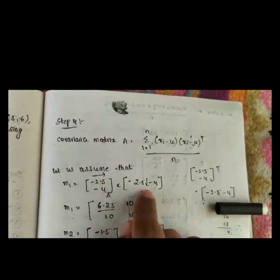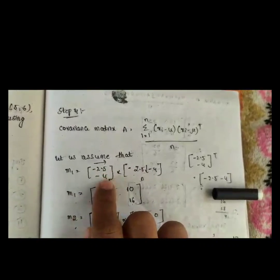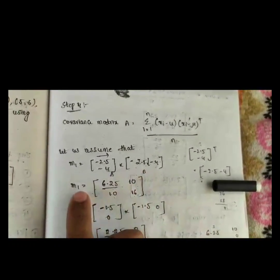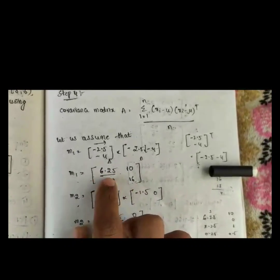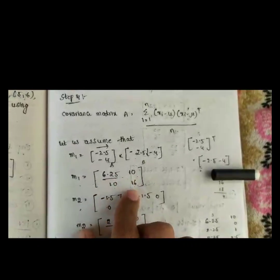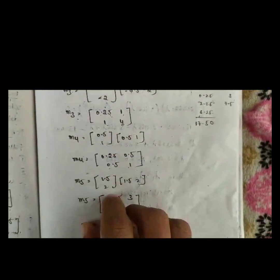Step four is calculating the covariance matrix A. Here (x minus mu) is the centered x vector, and its transpose gives us the outer product. We calculate M1 equals the matrix product of the first centered data point, giving the 2×2 matrix with elements 6.25, 10, 10, 16.